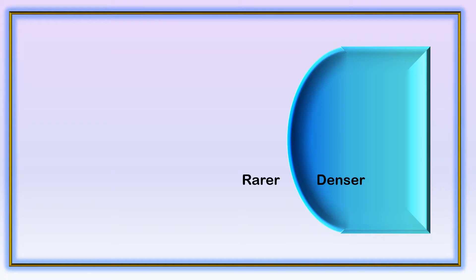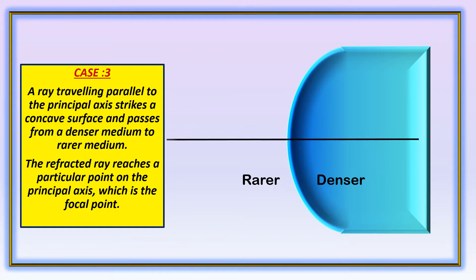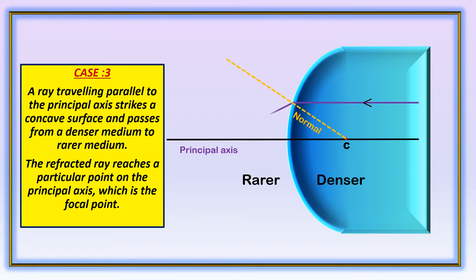This is a concave surface because the ray is traveling from denser medium to rarer medium. Case 3: A ray traveling parallel to the principle axis strikes a concave surface and passes from denser medium to rarer medium. The refracted ray reaches a particular point on the principle axis, which is the focal point. The ray is parallel to the principle axis and normal, and it reaches the principle axis at that particular point, which becomes the focal point.